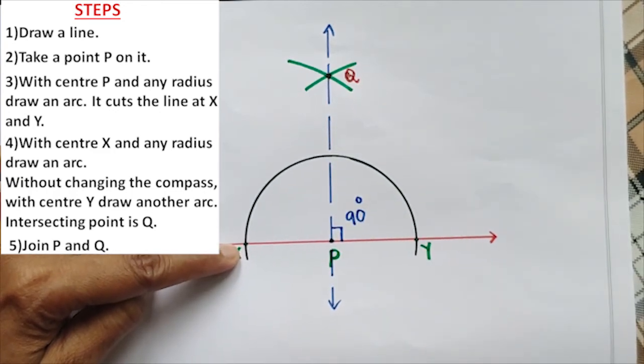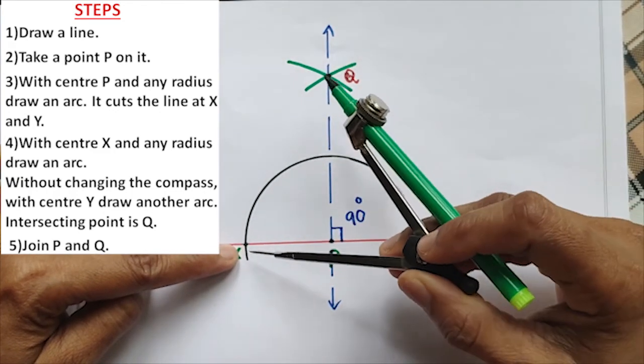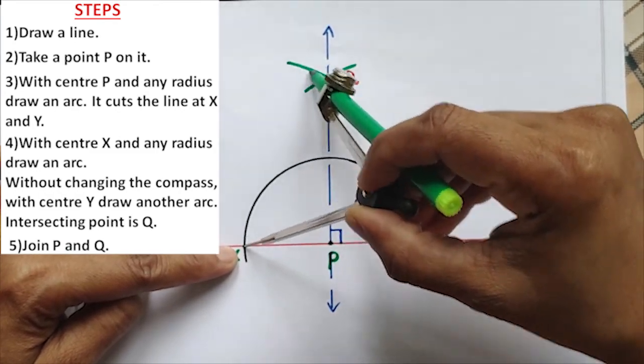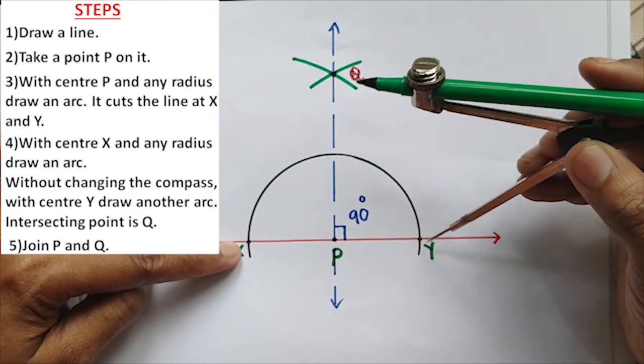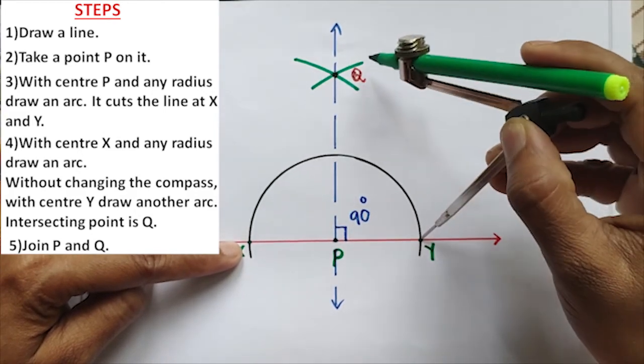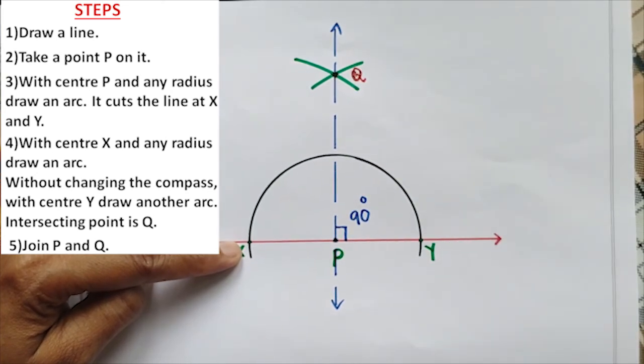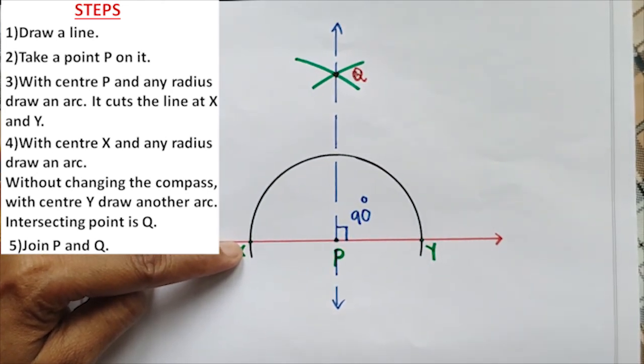With center X draw an arc. That means we have to take a little bigger radius, then draw an arc. Then with same radius, with center Y draw one more arc. Intersecting point is Q. Join P and Q. We will get the perpendicular through P.